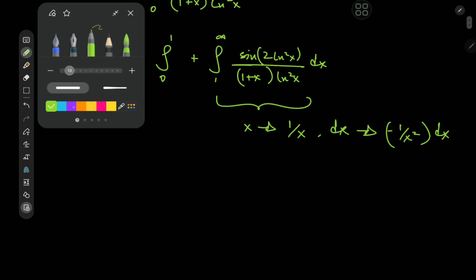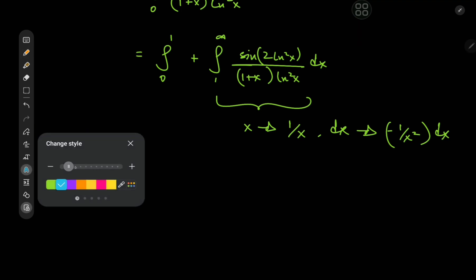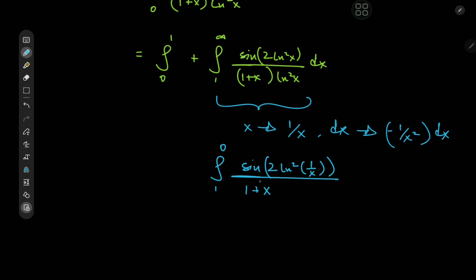So that means we would have the integral now from one to zero of sine of two log squared of one over x, divided by one plus one over x, times log squared of one over x, times negative one over x squared dx.